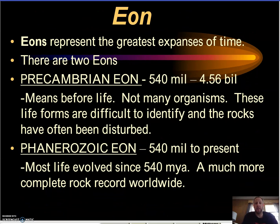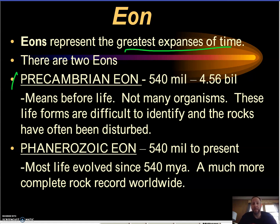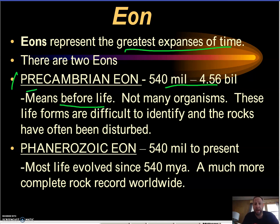Eons are huge — they represent the largest amount of time. We only have two eons. Number one is the Precambrian eon, from the beginning of the Earth at 4.56 billion years ago until about 540 million years ago. This is a huge chunk of time. Precambrian means before life — 'pre' meaning before, 'Cambrian' meaning life.